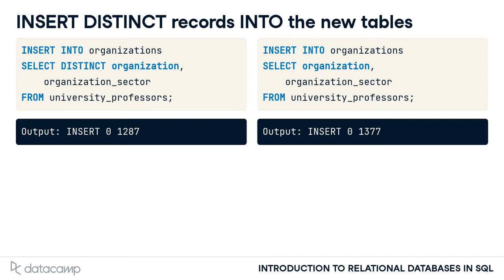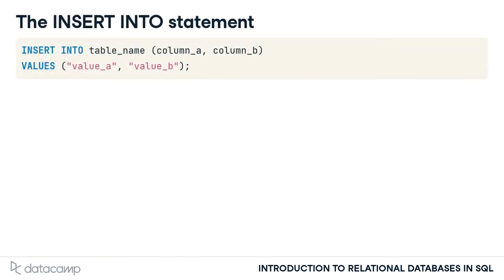In the following exercises, you'll migrate your data to the four new tables. By the way, this is the normal use case for INSERT INTO, where you insert values manually. INSERT INTO is followed by the table name and an optional list of columns which should be filled with data. Then follows the VALUES keyword and the actual values you want to insert.